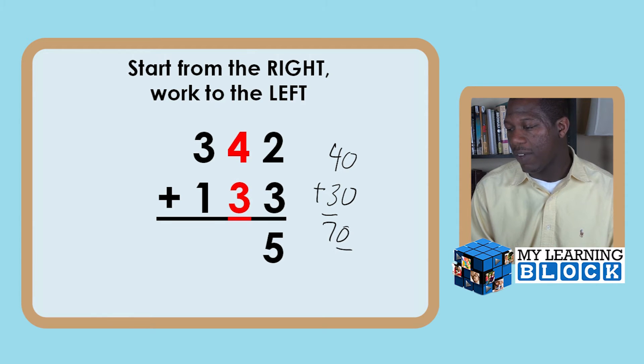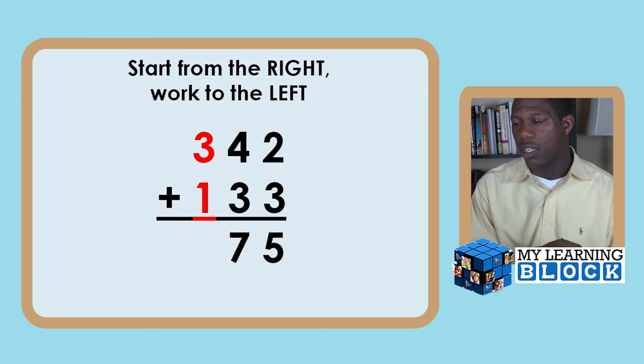Our five is already in our ones place so we're going to leave that alone and we're going to bring the seven over here to the tens place. Four plus three, 40 plus 30, 70, bring over the seven.